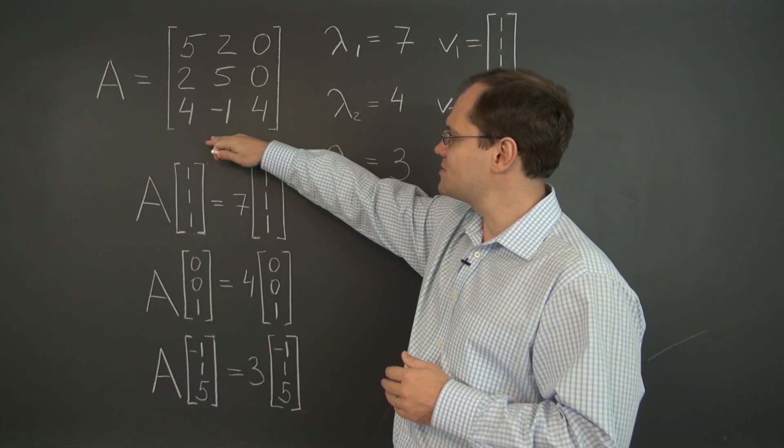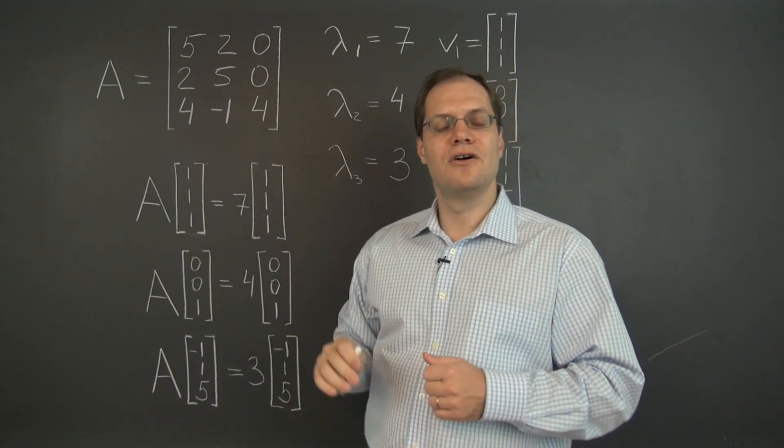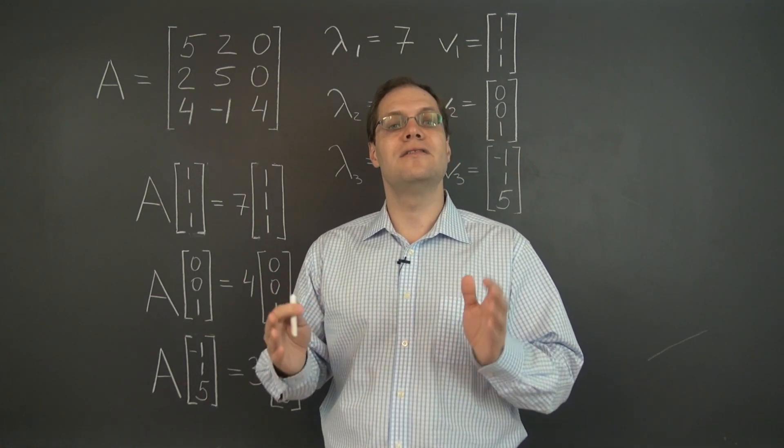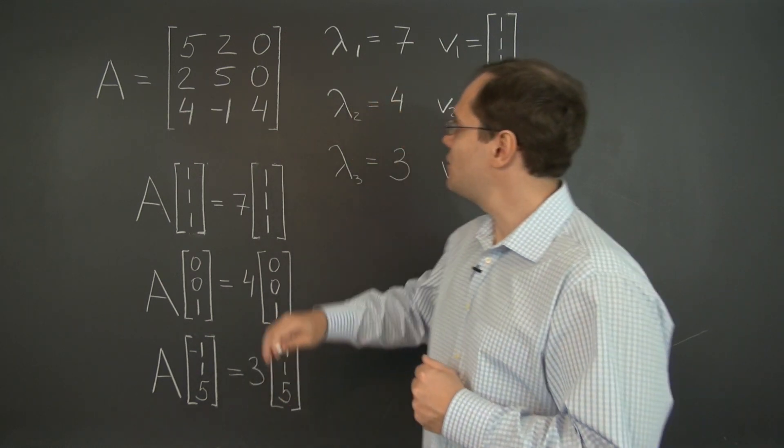So suppose we have a matrix, and I chose a matrix for which we can easily determine all of the eigenvalues and all but one of the eigenvectors. Not that it's important for this discussion. So here they are.